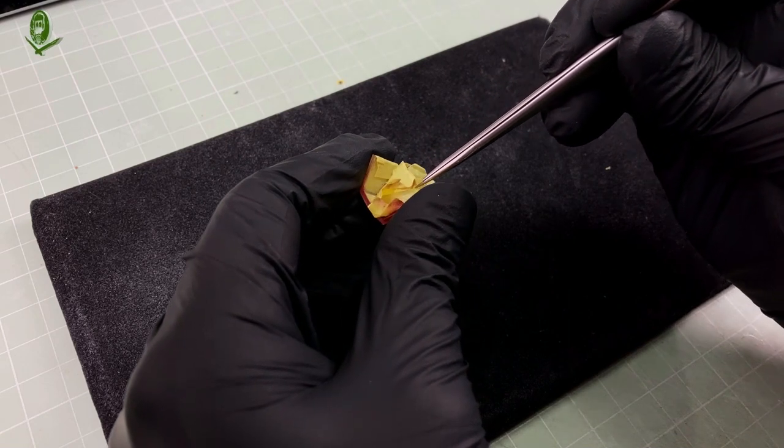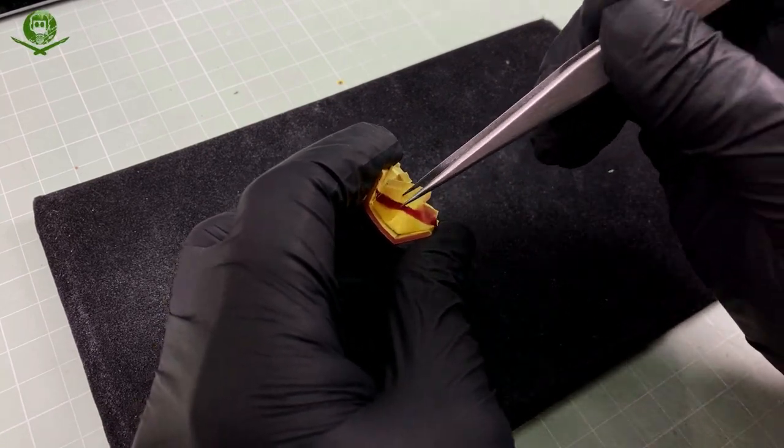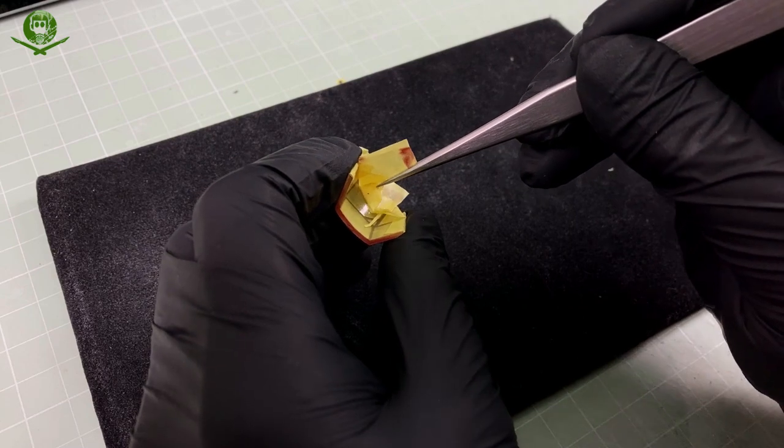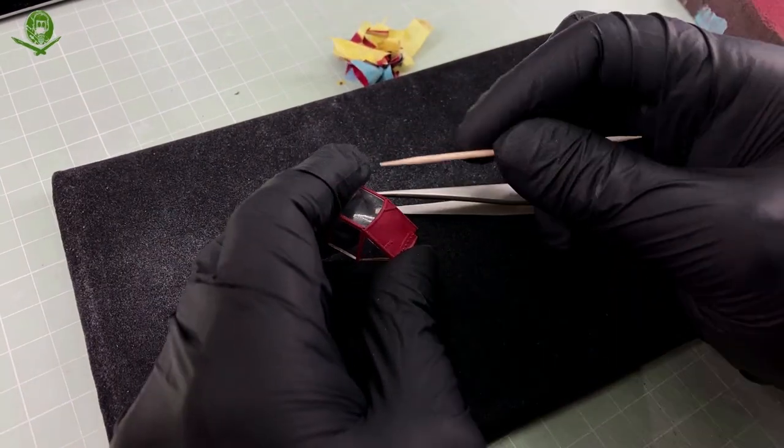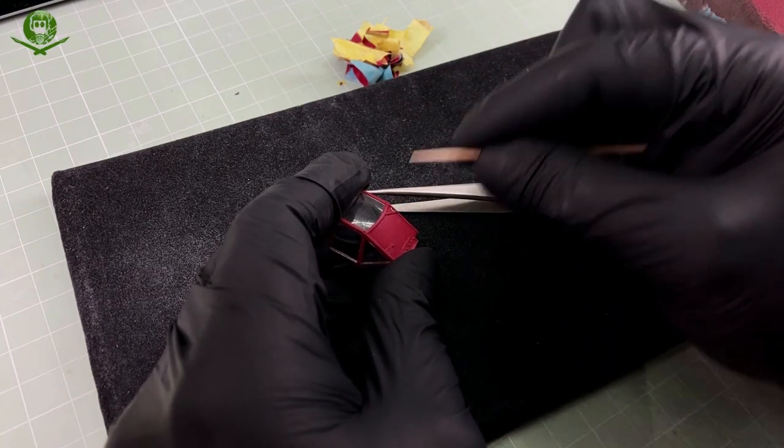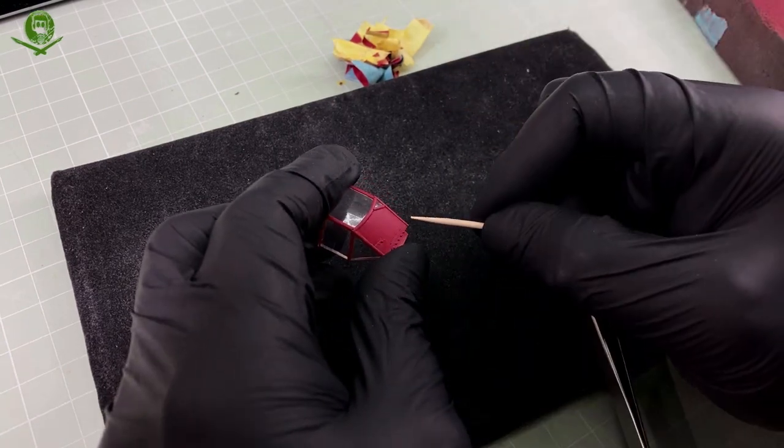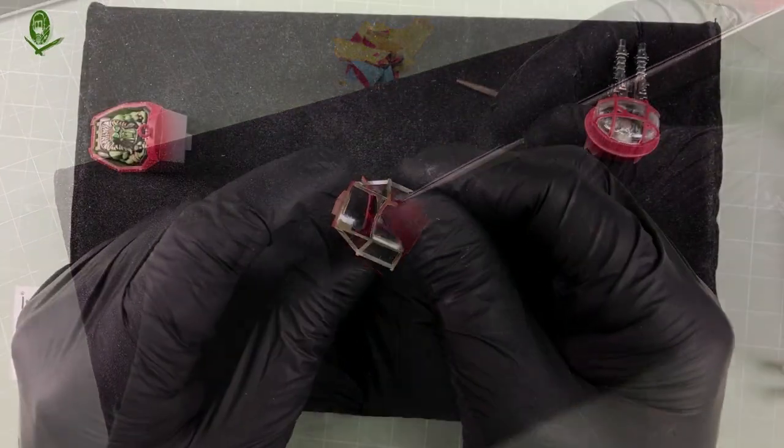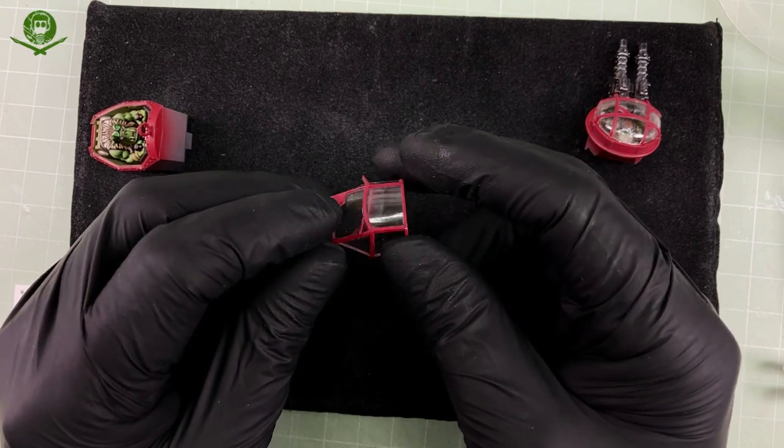Once the varnish had dried, it was the scary time when the masking comes off. It's simply carefully peeled away with tweezers or cocktail sticks. And voila! One painted canopy. Not perfect, but again, this is an ork flyer, so later weathering will hide any rough edges.